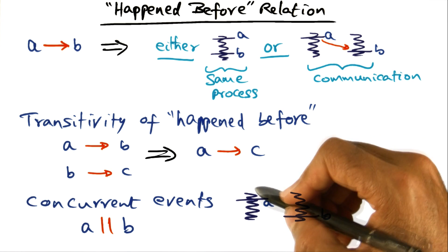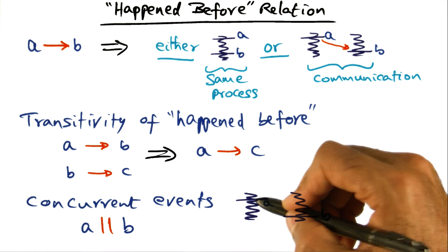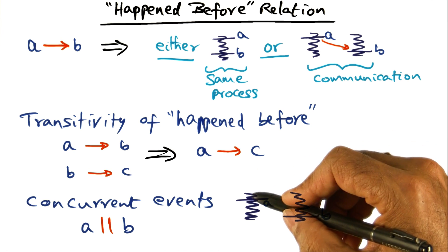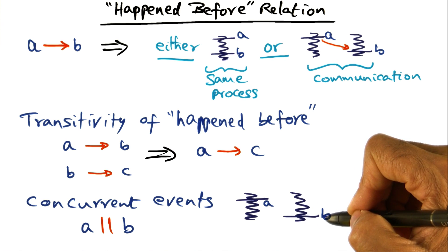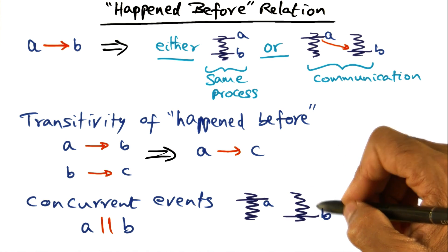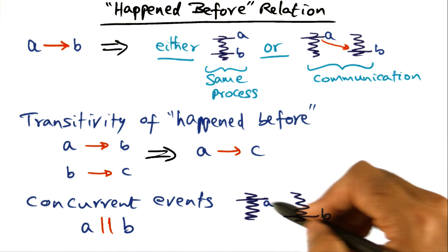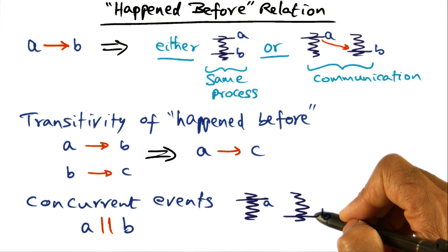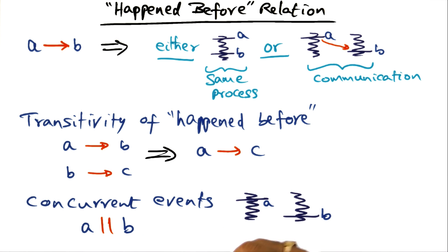And by the same token, since A is an event here, B is an event here, and there is no communication between these two guys that connects these events in any shape or form, either directly or transitively, there is no ordering between A and B. And therefore these two events are concurrent events.